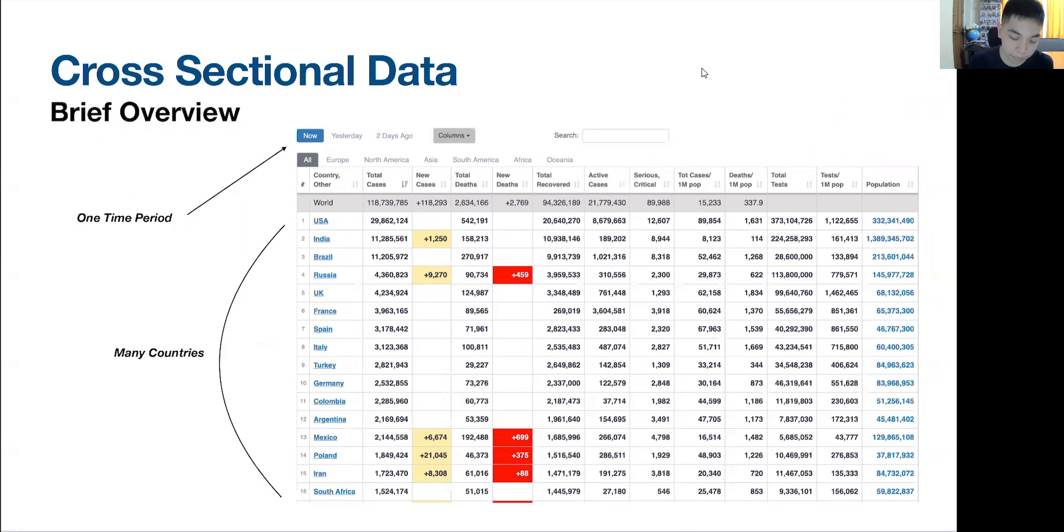If you look at the data set here, we only have this data set for one time period. You can find this data set on worldometers. As of time of recording, the world is under a global pandemic. We see that here, the cases are here. You have total number of cases, and you have multiple observations or multiple countries here. You have U.S., India, Brazil, Russia, U.K., France. And you have each here variables representing different various data points. This is an example of a cross-sectional data set.